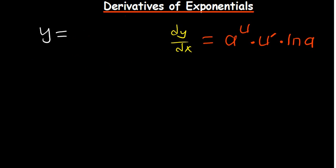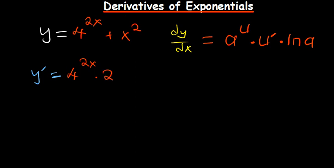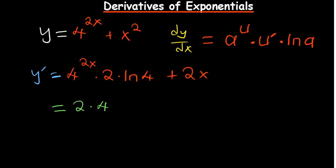Now what if you have a base of 4 raised to the power 2x plus x squared? Feel free to pause the video. The derivative: maintain 4^(2x) as it is, multiply by the derivative of the power 2x which is 2, then multiply by ln(4). Plus the derivative of x squared, which by the power rule is 2x. Simplified: 2 · 4^(2x) · ln(4) + 2x.